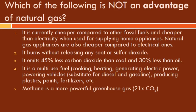Mini quiz: which of the following is NOT an advantage of natural gas? Options include: it's cheaper than other fossil fuels and cheaper than electricity for home appliances; natural gas appliances are cheaper than electrical ones; it burns without releasing soot or sulfur dioxide; it emits 45% less CO2 than coal and 30% less than oil; it's a multi-use fuel; and methane is a more powerful greenhouse gas — 21 times that of CO2. The answer: methane being a more powerful greenhouse gas is NOT an advantage.